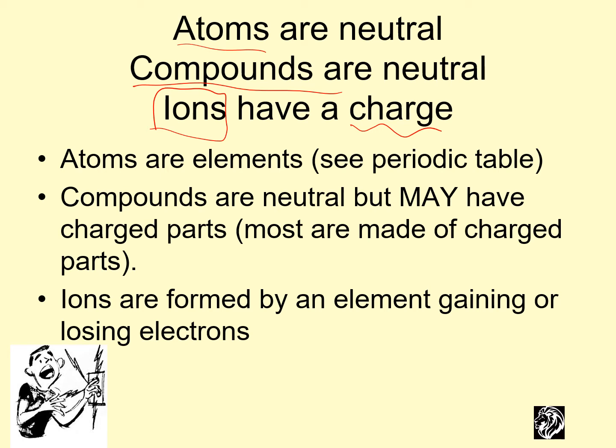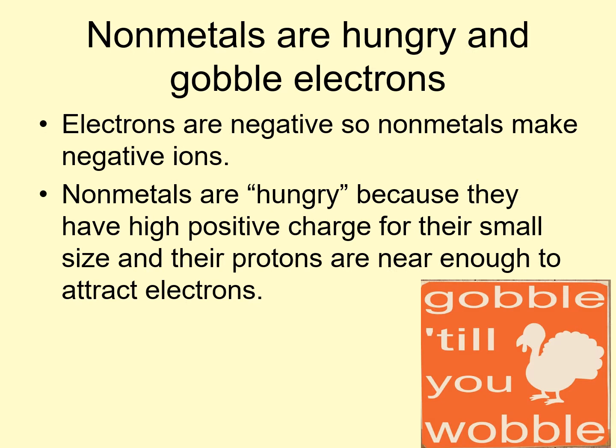Ions are formed by an element gaining or losing electrons. So nonmetals on the periodic table, they are hungry and they gobble electrons. Electrons are the negative parts. So nonmetals make negative ions because they take electrons away from other atoms.